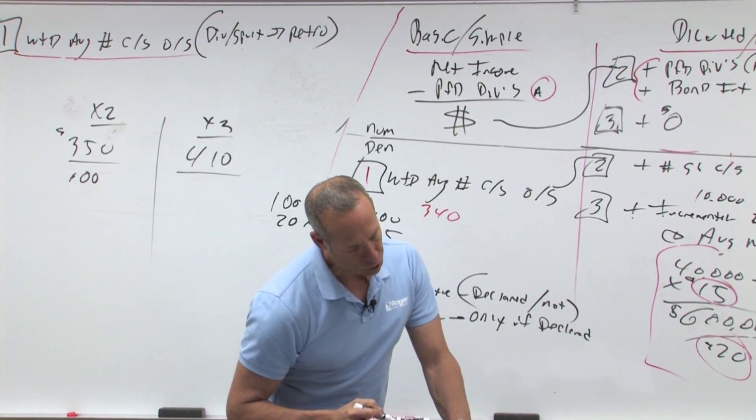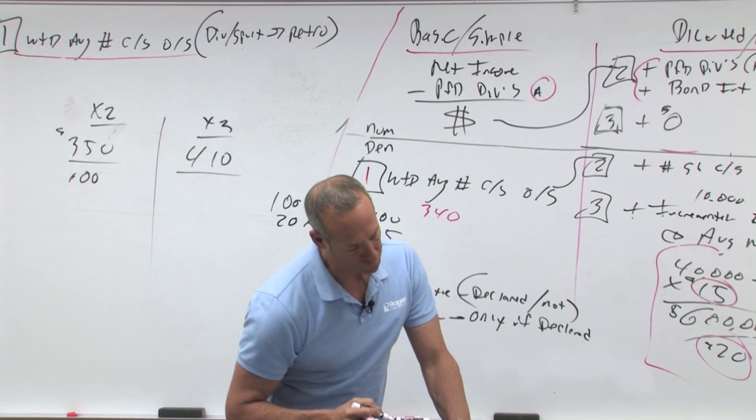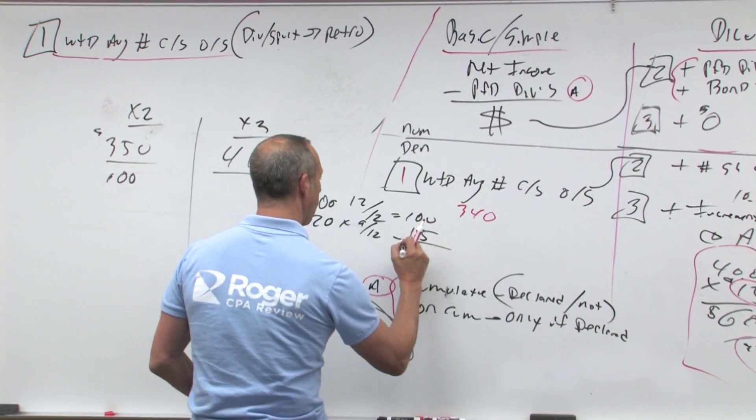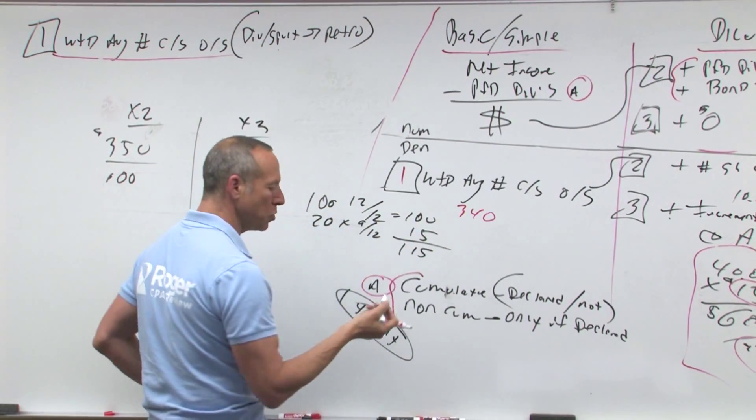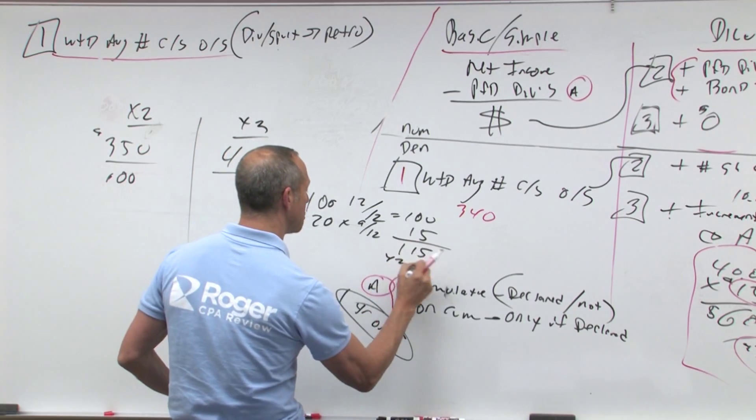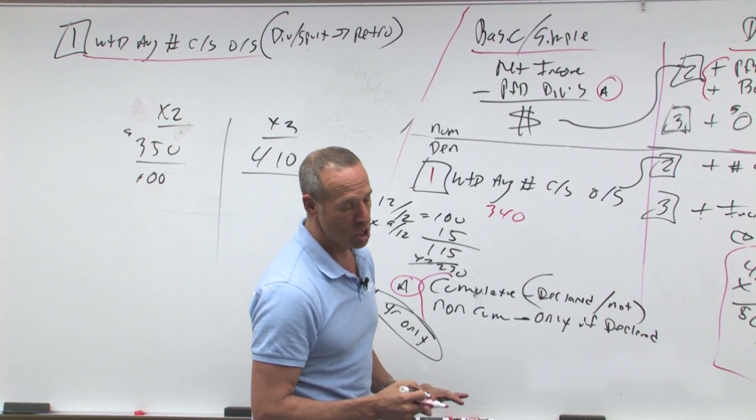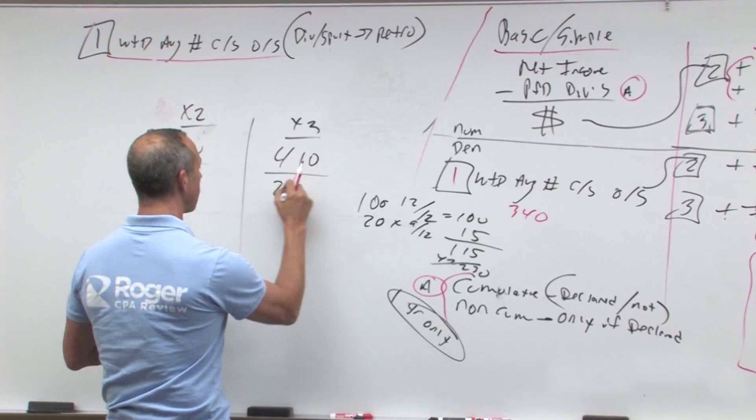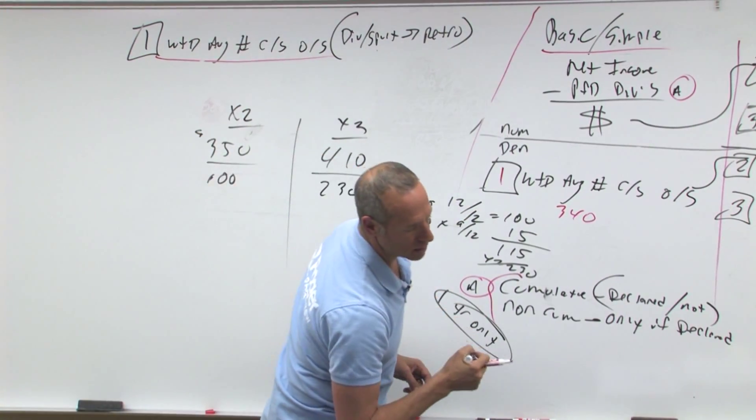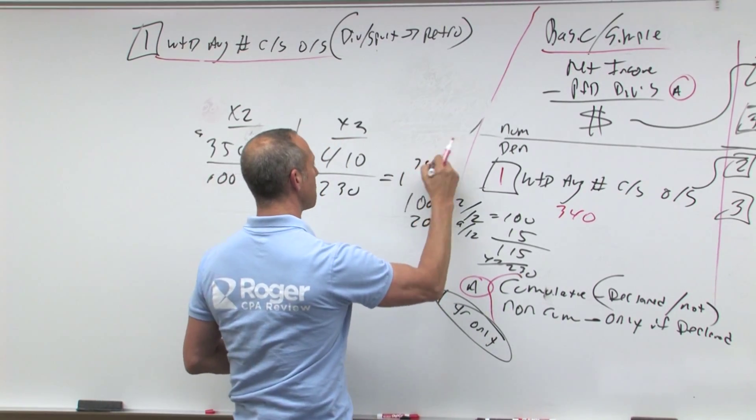Then we had a two for one stock split, two for one. So that means we've got 115 and a two for one means we're going to double it times two is 230. So we have 230 weighted average. So 410 over 230 gives me something like $1.78.